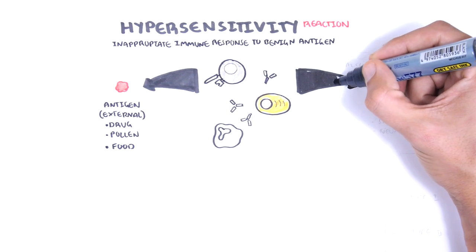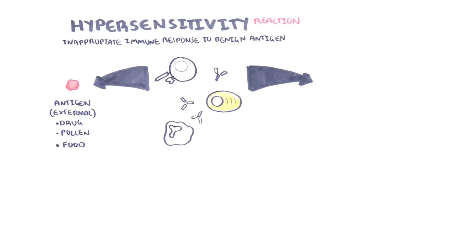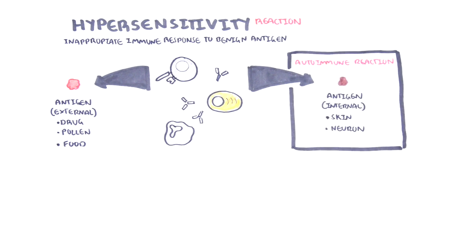However, an inappropriate immune response to an internal antigen, such as your own skin or neuron, would be called an autoimmune reaction. Hypersensitivity reactions can be the mechanism of diseases in some autoimmune reactions.